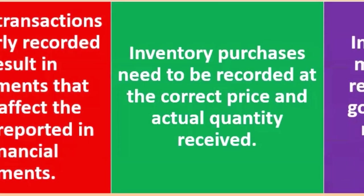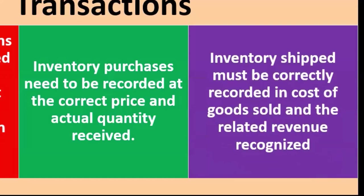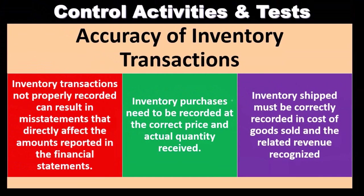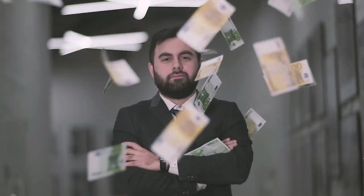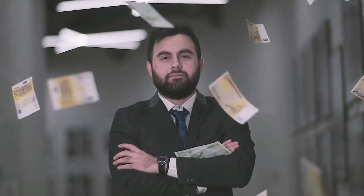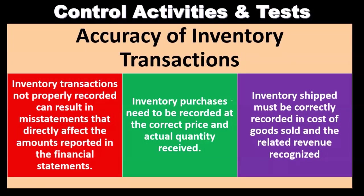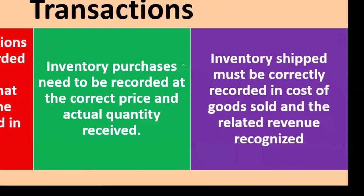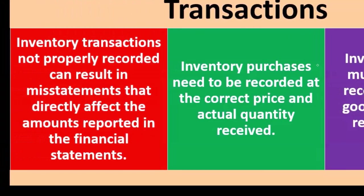Inventory shipped must be correctly recorded in cost of goods sold and the related revenue recognized. When a sale occurs, revenue goes up, accounts receivable or cash goes up, and inventory goes down. Revenue is recognized when the work is completed, and the cost of goods sold — following the matching principle — is also recorded at that point in time, which is typically when the inventory ships.